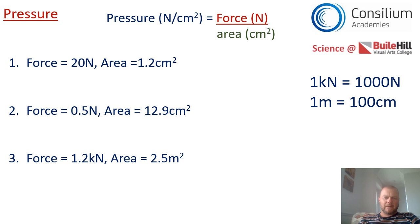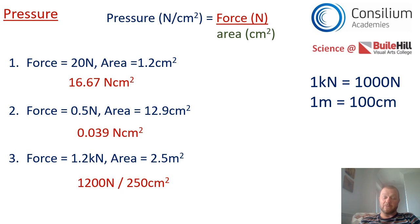How did you do? The answer to question one is 16.67 newtons per centimetre squared. The answer to question two is 0.039 newtons per centimetre squared. For question three the first thing you would have to do is convert 1.2 kilonewtons into 1200 newtons and the area of 2.5 metres squared into centimetres squared would be 25,000 centimetres squared. So our answer would be 0.048 newtons per centimetre squared. Well done if you got that right.